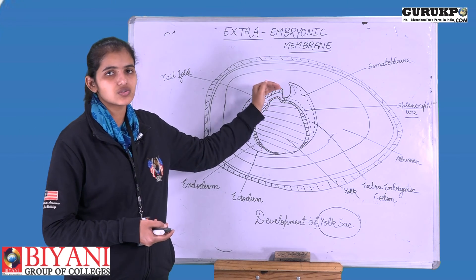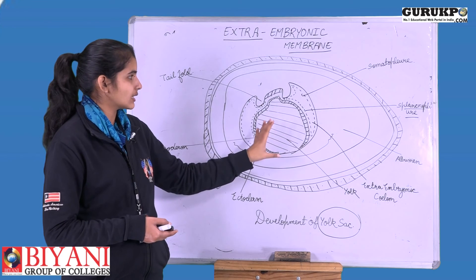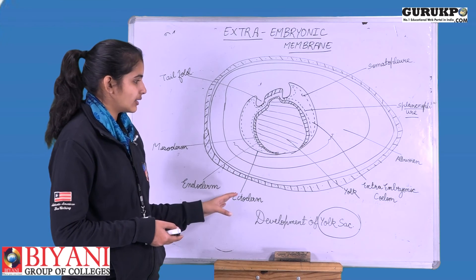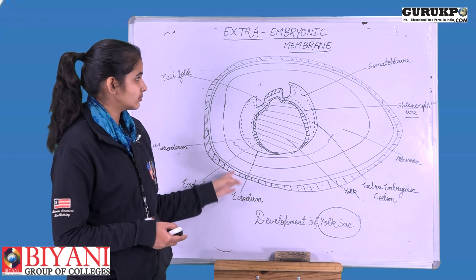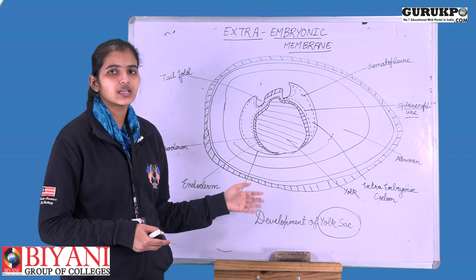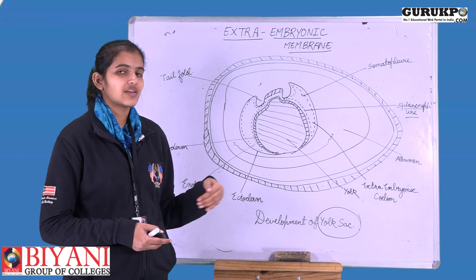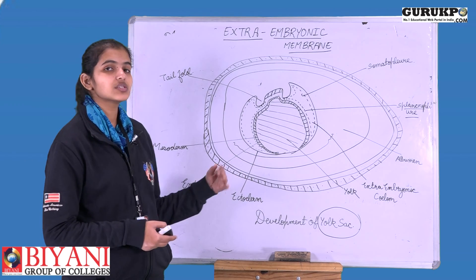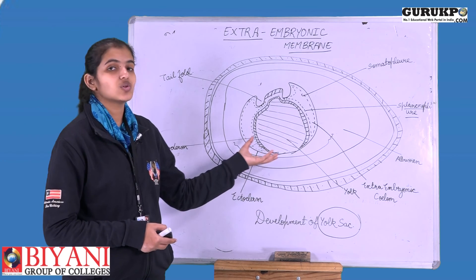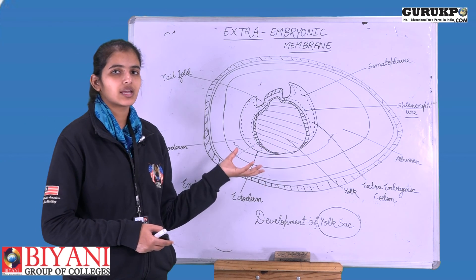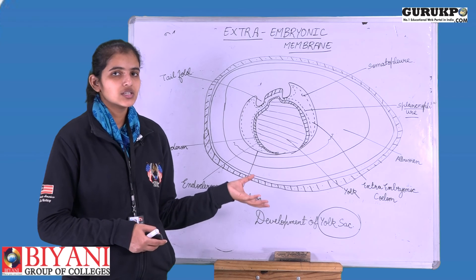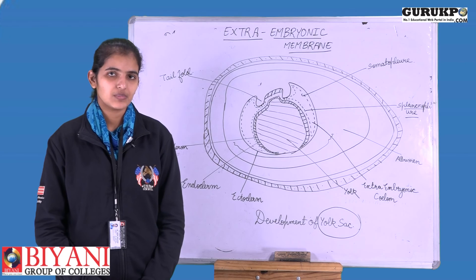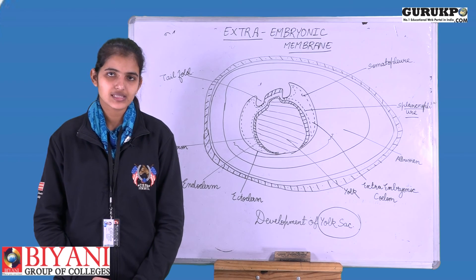There are various other layers in this egg which provide protection and have their own specific functions, which we will discuss later. But the first membrane to be formed is the yolk sac, because without nutrition nothing else can occur. That's all for today. Thanks for watching — please like, share, comment, and subscribe to the gurukpo channel. Thank you and have a nice day.